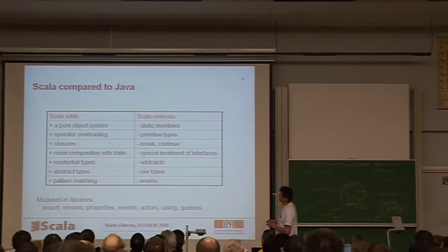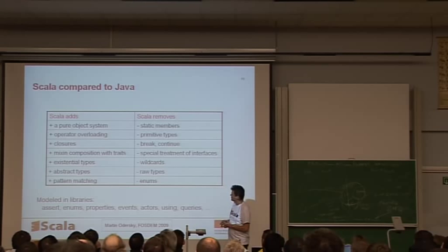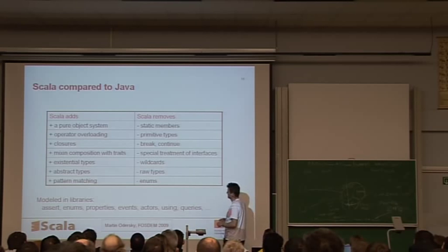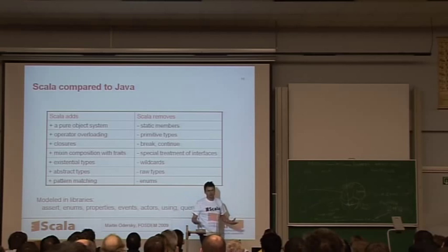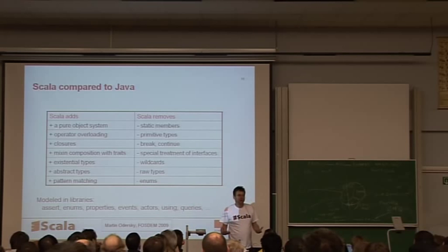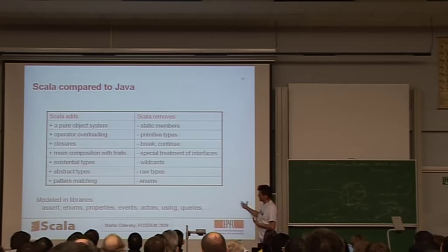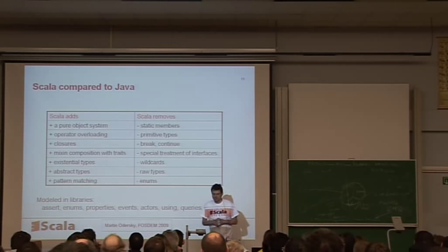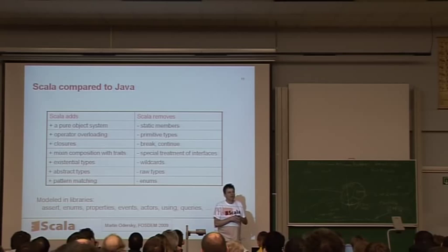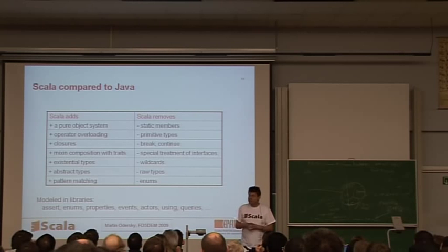So if you compare Scala to Java, then what we add is a pure module system. So everything is an object, operator overloading - so operators are just method calls. We add closures that come from the functional side. We add new form of composition, which is called mixin composition, which is essentially a modern form of multiple inheritance. And we add on the type side, interesting things like existential types, abstract types, and we add pattern matching.